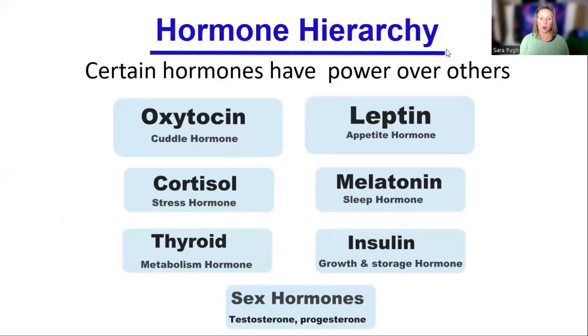Let's quickly have a look at the hormone hierarchy, just so people can get up to speed. Certain hormones have power over others — things like leptin and oxytocin are high up. The hormones we're talking about today, testosterone and estrogen, are low down. And insulin is a bit higher up in the hierarchy than testosterone and estrogen.